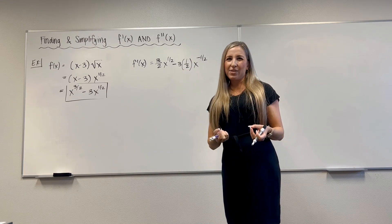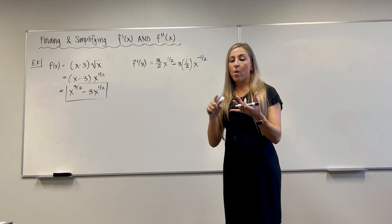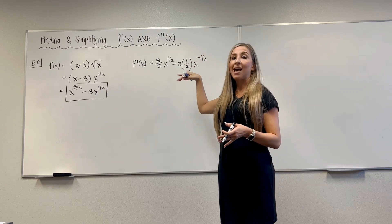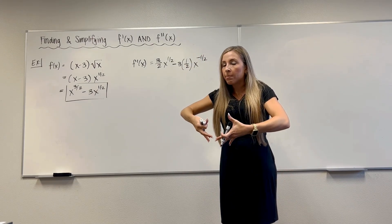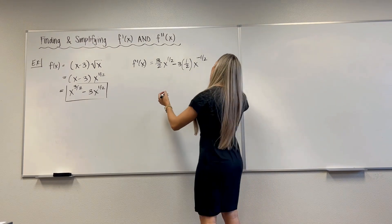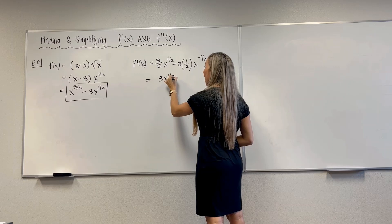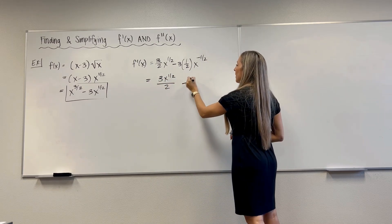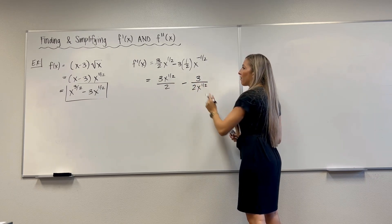So we'll have 3 halves x to the 1 half minus 3 times 1 half times x to the negative 1 half. If you need to review your differentiation rules, you just do it. Don't be embarrassed. As I mentioned earlier, when you find these derivatives, you want to simplify them enough because you're going to test where they're equal to 0, where they're positive, where they're negative. So the way it is right here, it's a hot mess. You can't do it. But you want it as one term.